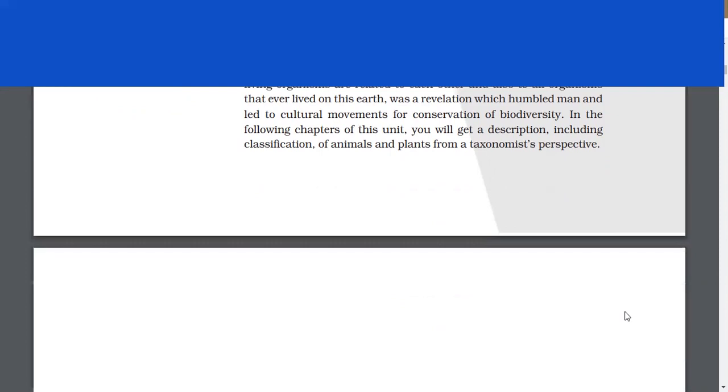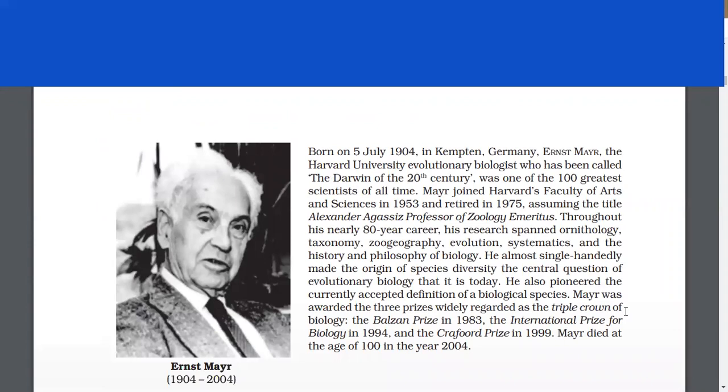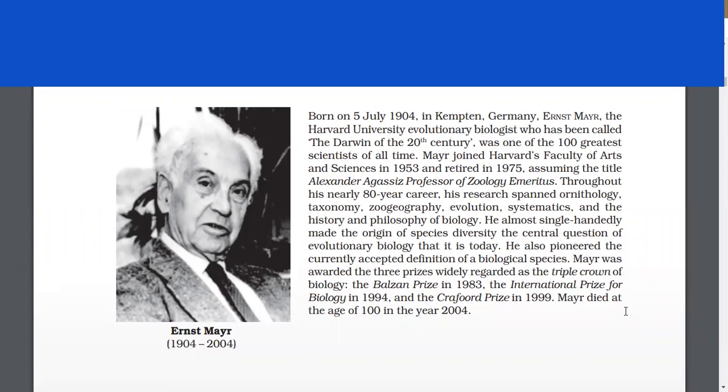Born on 5th July 1904 in Kempton, Germany, Ernst Mayr, the Harvard University evolutionary biologist who has been called the Darwin of the 20th century, was one of the 100 greatest scientists of all time. Mayr joined Harvard's Faculty in 1953 and retired in 1975, assuming the title Alexander Agassiz Professor of Zoology Emeritus.